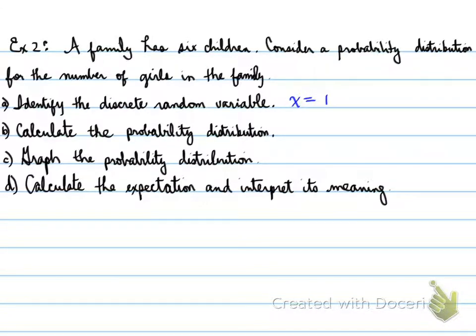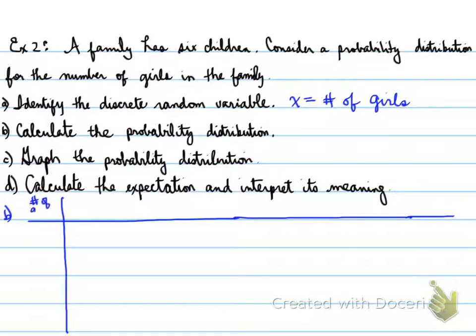The discrete random variable here is the probability of getting the number of girls. Now, to calculate the probability distribution, we want to do a chart. X is the number of girls, so we could have zero girls, one girl, all the way up to six girls, because there are six children in the family.